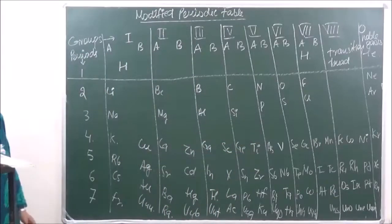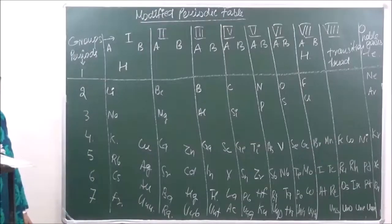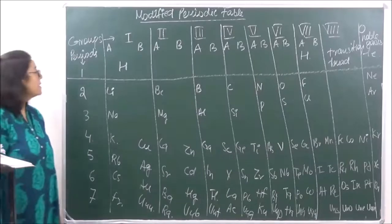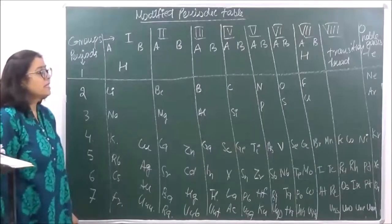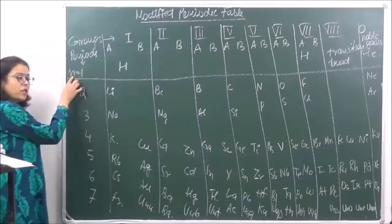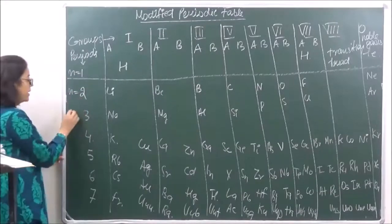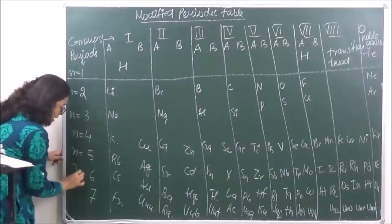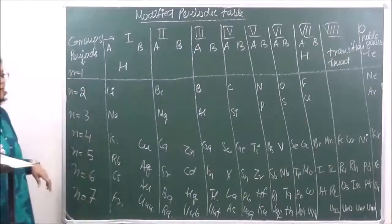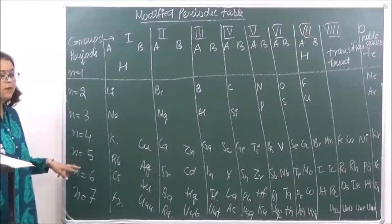To summarize: the entire table consists of 9 groups starting from 1 to 0. Groups 1 to 7 are divided into subgroups A and B and are known as normal groups. Group 8 has three elements placed together and is known as the transition triads. Group 0 has the noble gases. The horizontal lines in the table are known as periods, and there are 7 periods. Each period signifies the principal quantum number — for example, period 1 corresponds to n = 1, period 2 corresponds to n = 2, and so on up to n = 7.